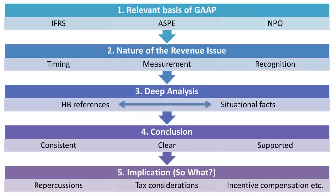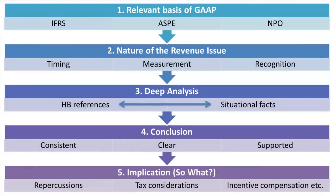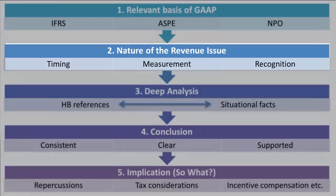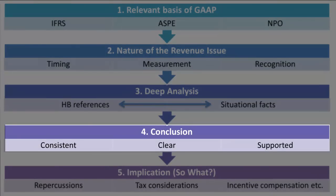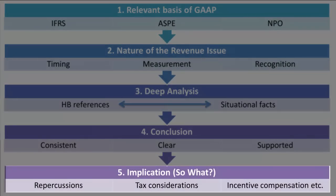So there you have it — an overview of accounting for revenue. To summarize your approach: first, consider the relevant basis of GAAP, whether it's international standards, private entity standards, or non-profit organization standards. Next, identify the nature of the revenue recognition issue — is it a timing issue, a measurement issue, or a recognition issue? Thirdly, and very importantly, apply applicable guidance to the situational facts to develop deep analysis. Now you are ready to conclude on your accounting policy decision based on well-documented analysis. Finally, consider the implications of your analysis — this decision could have broader repercussions on financial results and metrics, there could be tax considerations, and there could be management incentive compensation at stake. So always consider the 'so what' of your conclusion.